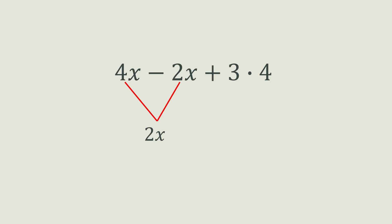3 and 4 are also like terms, so you can multiply them and get 12. Then, just add the addition sign and you get the final simplified answer of 2x plus 12.